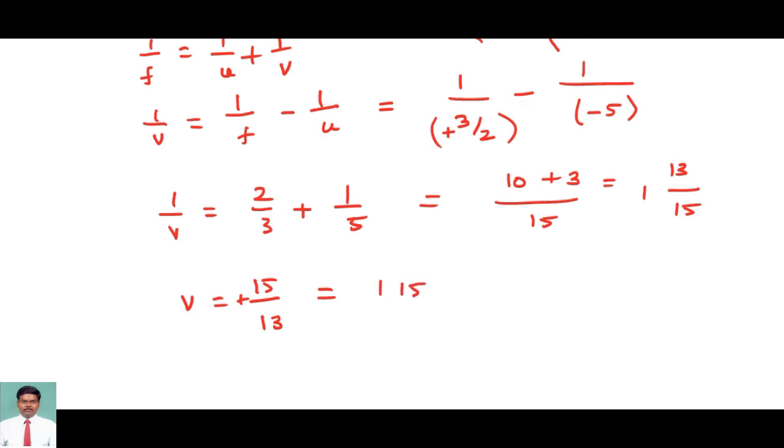1.15 meters. So that represents, like I am taking a convex mirror and keeping an object at 5 meters. v is plus 1.15.